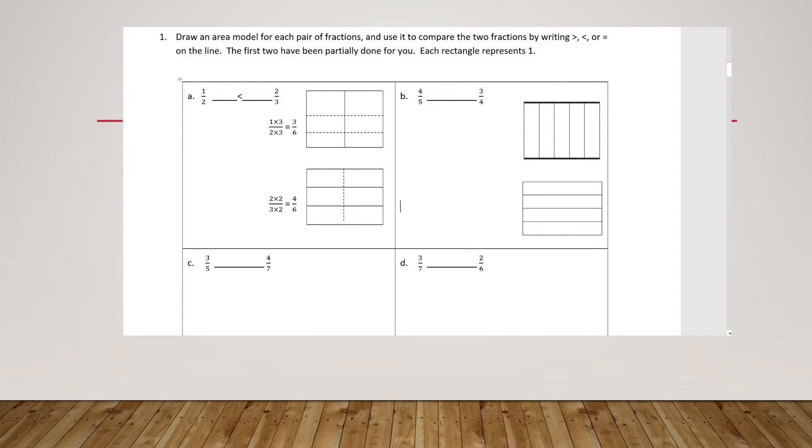Today we are going to compare fractions by finding a common denominator. In number one it says draw an area model for each pair of fractions and use it to compare the two fractions by writing greater than, less than, or equal to on the line. The first two have been partially done for you. Each rectangle represents one.